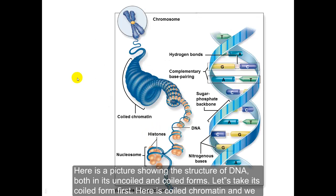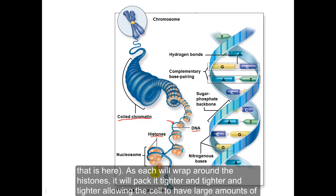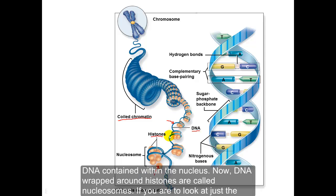Here is a picture showing the structure of DNA in both its uncoiled and coiled forms. In the coiled form we can see that as it gets into smaller and smaller structures, the DNA itself — the blue strand — is wrapped around the histones. As each strand wraps around the histone, it packs tighter and tighter, allowing the cell to contain large amounts of DNA within the nucleus. DNA wrapped around histones we call nucleosomes.